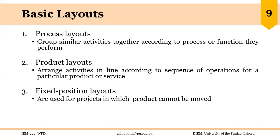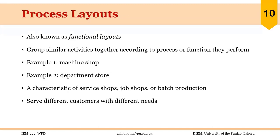Process layouts group similar activities together according to the process or function they perform. Product layouts arrange activities in line according to the sequence of operations for a particular product or service. Fixed position layouts are used for projects in which the product cannot be moved, so labor and resources move toward the product. Process layouts are also known as functional layouts because similar functions are grouped together. Examples include machine shops and departmental stores.